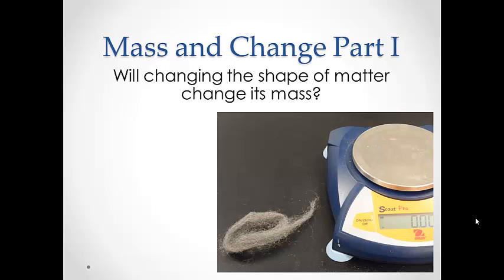Part 1 will use steel wool and a balance. The question for this part of the lab is whether or not changing the shape of steel wool will change its mass. So we will start out with a piece of steel wool. Since we are looking for a change in mass, we will need to know the mass before we change the shape. This is known as our initial mass and is given the designation of m sub i.